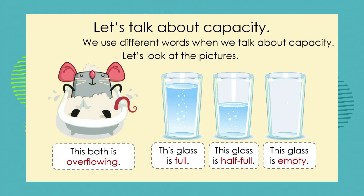Let's read the sentences together, grade ones. We can see that the mouse is having a relaxing bath. This bath is overflowing. So what does overflowing mean? This means when we have too much liquid in a container and it's too much for the container to hold, the liquid will go outside of the container — or as we say, overflow.